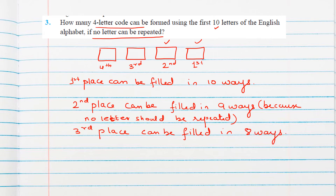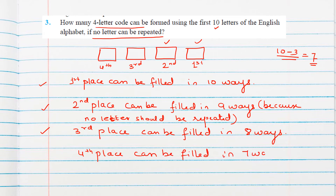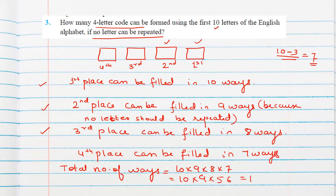Now the 1st, 2nd, and 3rd places have been filled, meaning 3 alphabets have been used. Out of 10, that leaves 7 alphabets remaining to fill the 4th place. So the total number of ways is 10×9×8×7 = 5040 ways.